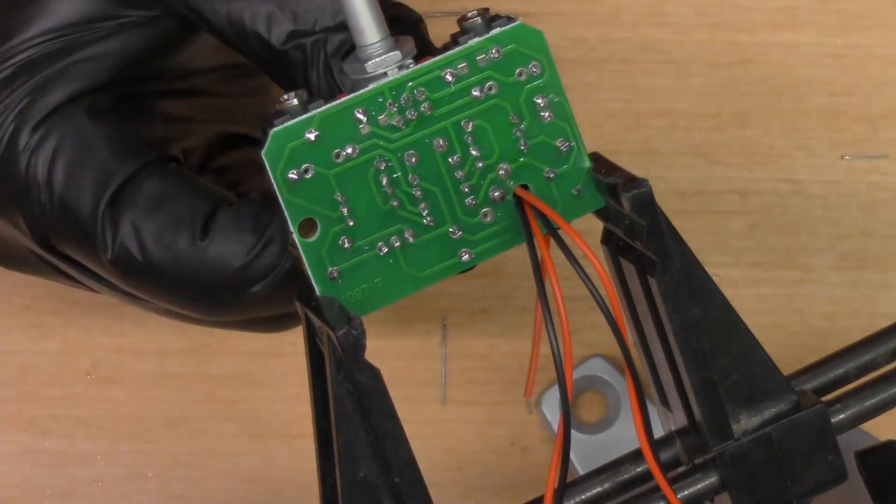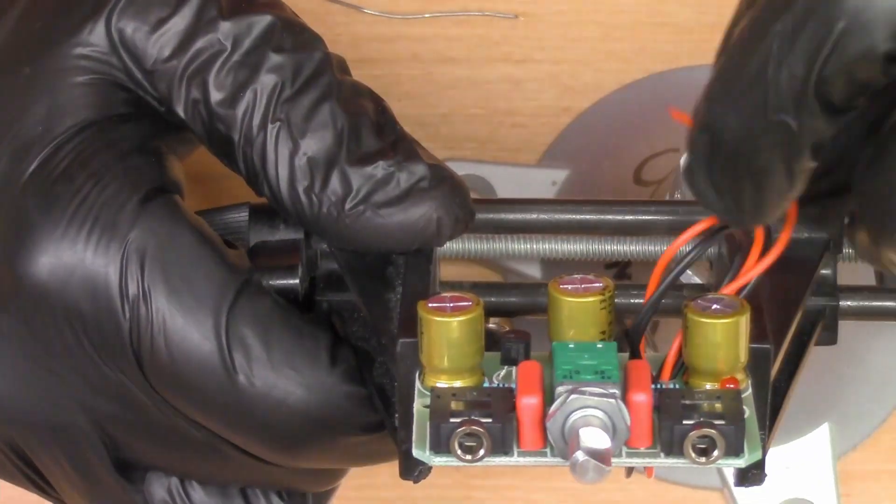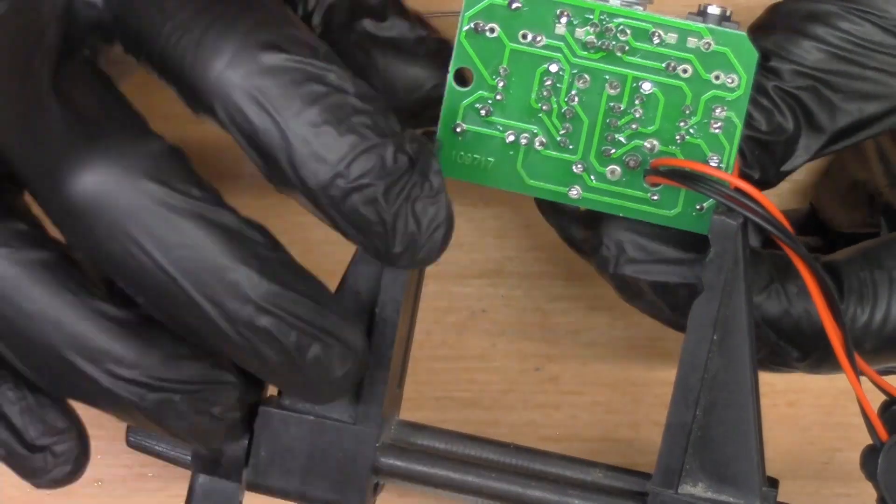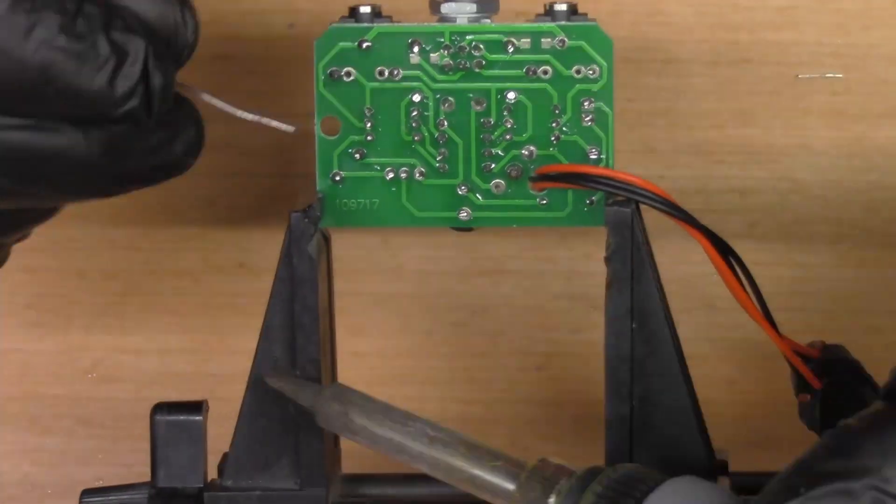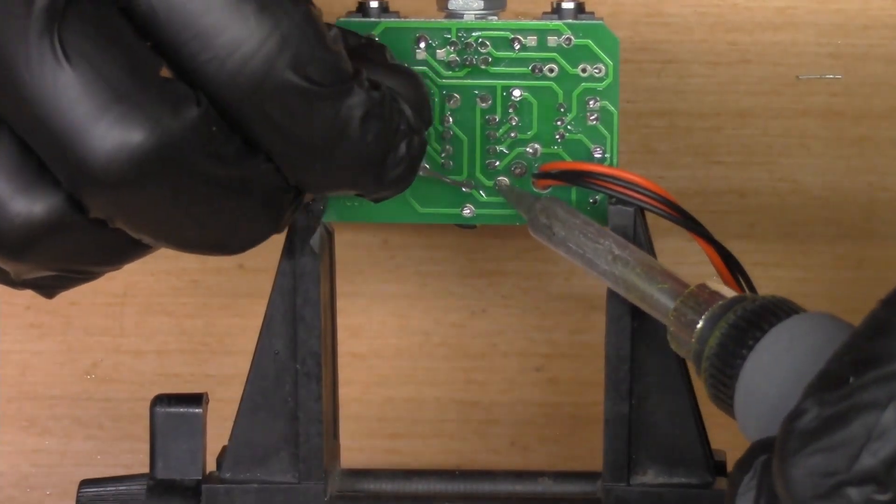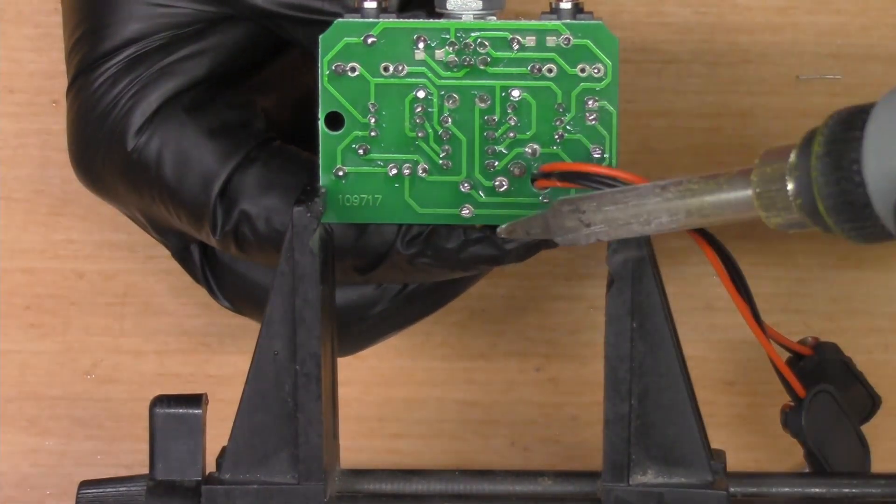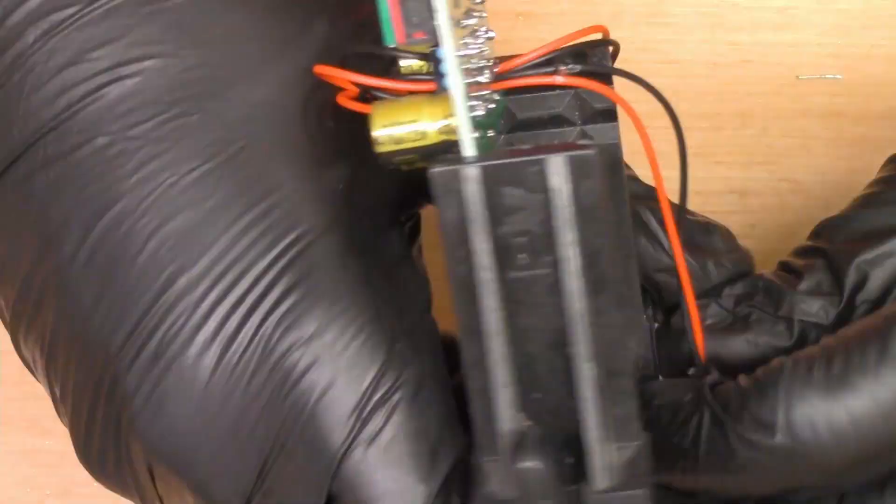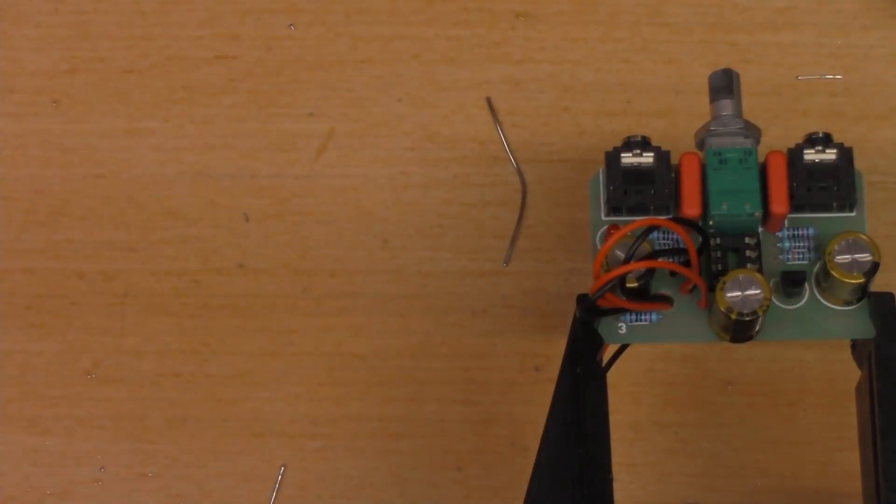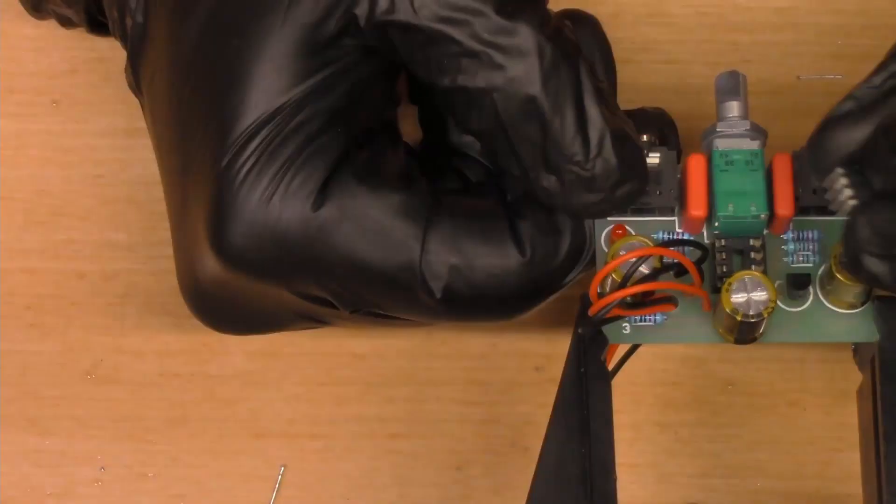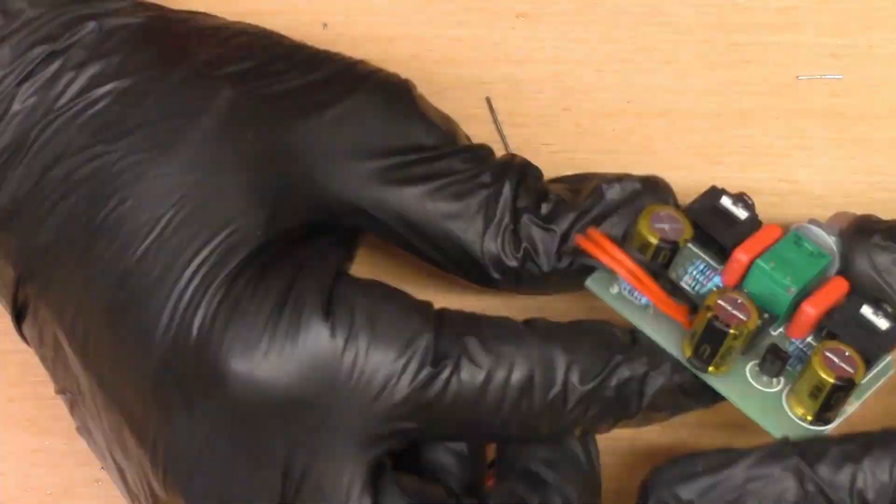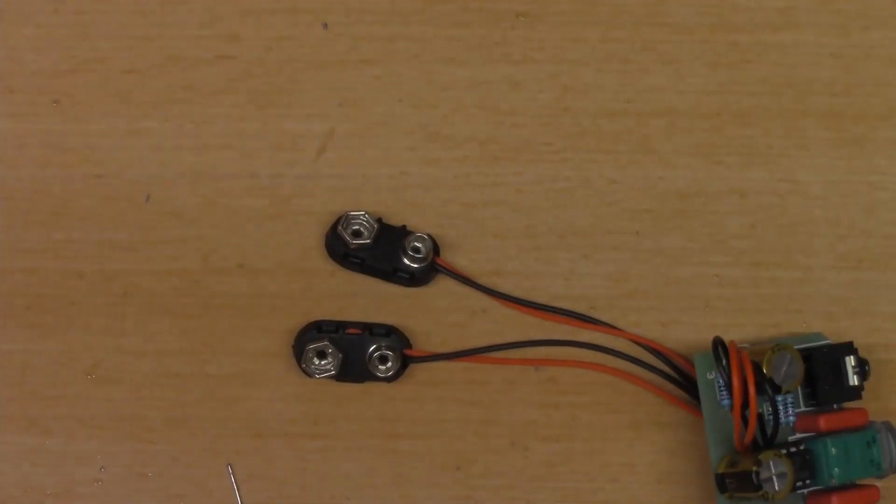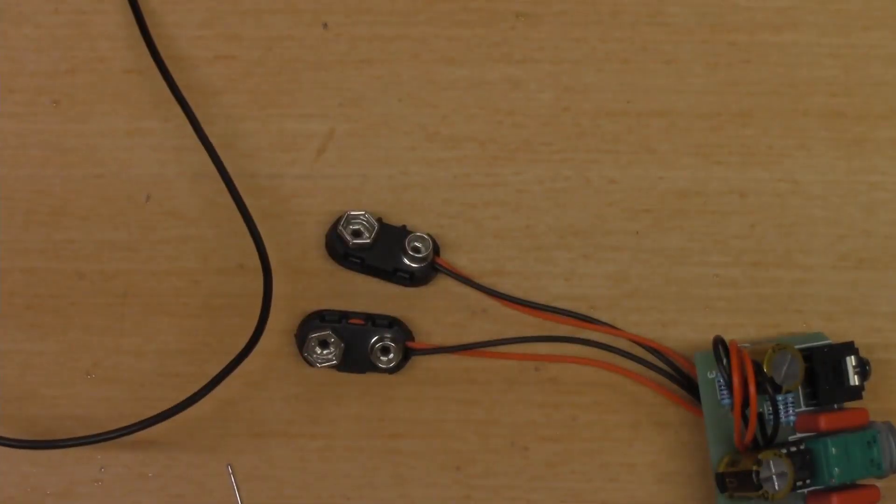These were a little finicky to solder and hold in place, but I finally got them. Not too bad. Here I am doing the second pair. Now the only thing that remained was the IC, and you can see it's a little bit of a tight squeeze to get it between the capacitor, but I managed to get it in there.